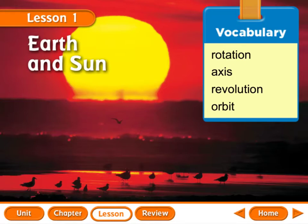This lesson is for fourth grade. This is lesson one in chapter eight over the solar system. Today's lesson is talking about Earth and the Sun. We're going to talk about topics such as apparent motion, rotation, and revolution, which are your vocabulary words. We're going to talk about what causes day and night, seasons, what the weather's like at the poles and different places on Earth, and a little bit about shadows.